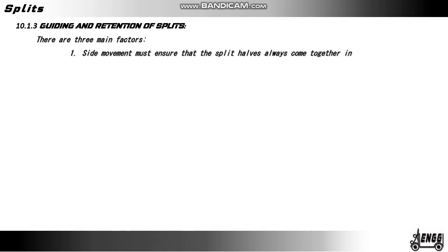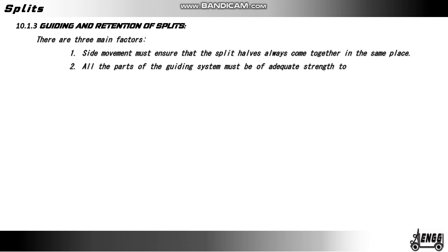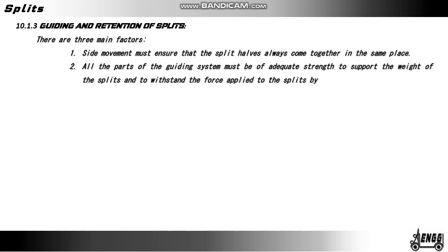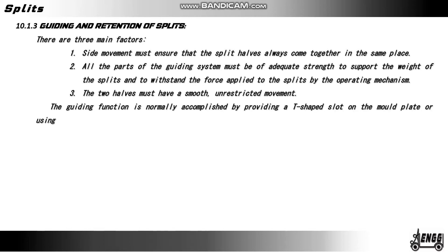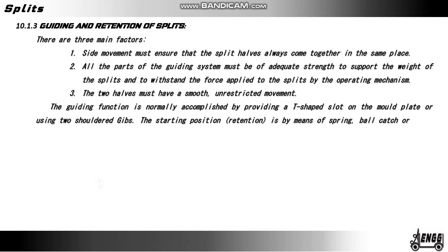There are three main factors. Slide movement must ensure that the split halves always come together in the same place. All parts of the guiding system must be of adequate strength to support the weight of the splits and to withstand the force applied to the split by the operating mechanism. The two halves must have a smooth, unrestricted movement. The guiding function is normally accomplished by providing a T-shaped slot on the mold plate or using two shoulder keeps. Starting position retention is by means of a spring ball catch or other standard item.